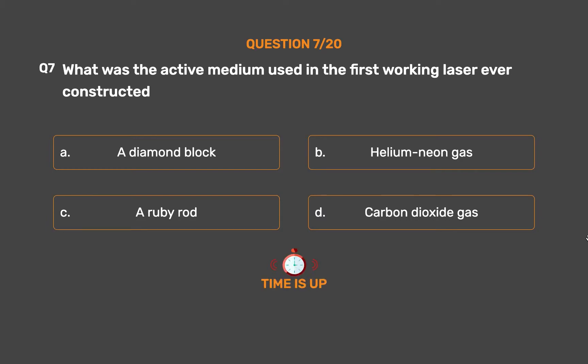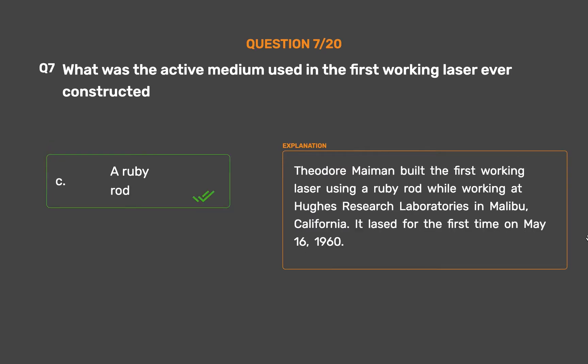The correct answer is Option C: A ruby rod. Theodore Maiman built the first working laser using a ruby rod while working at Hughes Research Laboratories in Malibu, California. It lased for the first time on May 16, 1960.